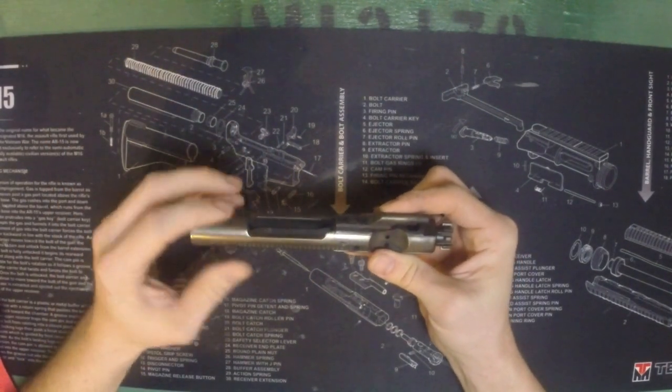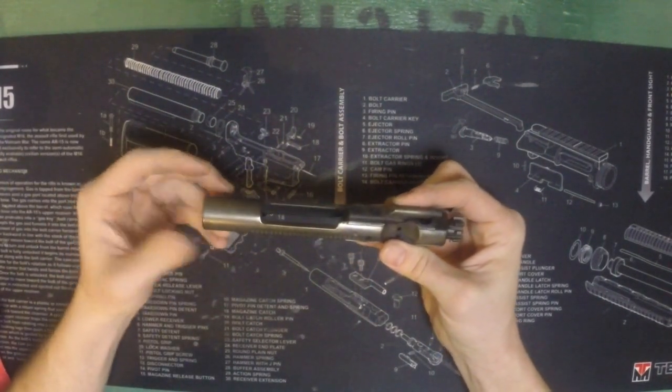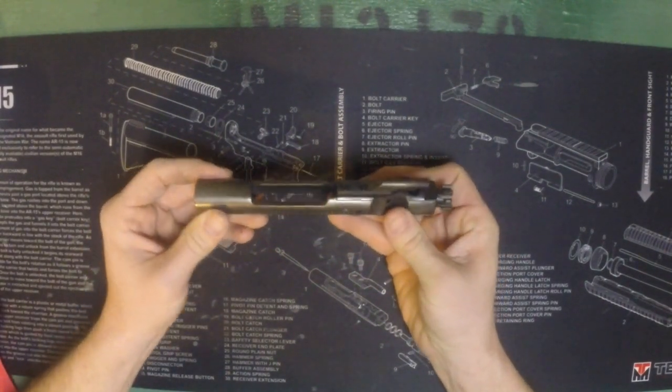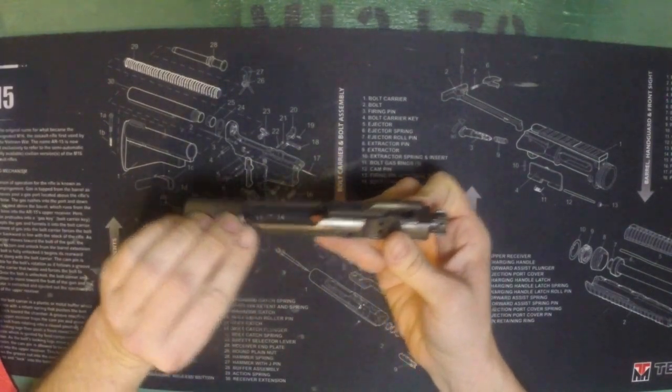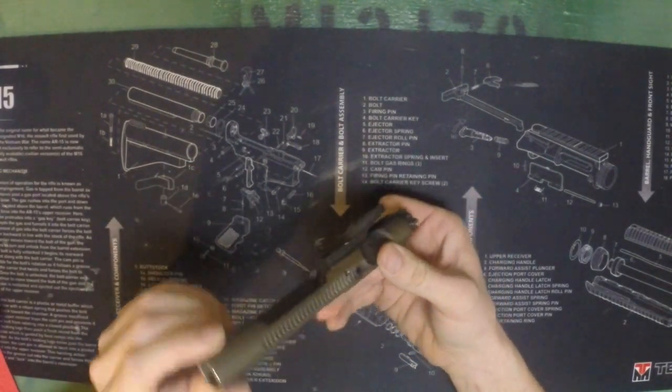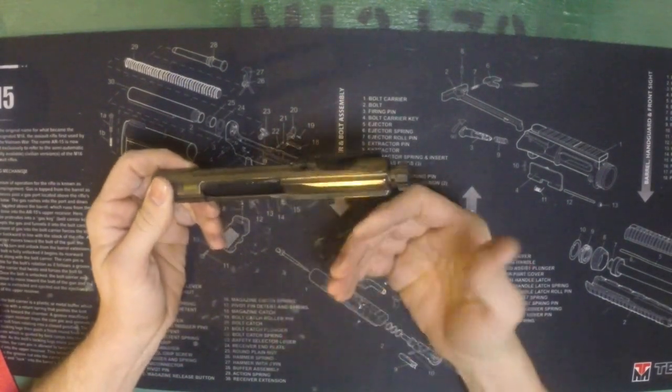Unlike bare steel, when bare steel oxidizes it rusts—you'll see pitting and rust and everything like that. But when nickel boron oxidizes, it just dulls up, so it's not gonna look as nice when you buy it and it's brand new.